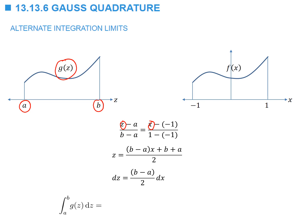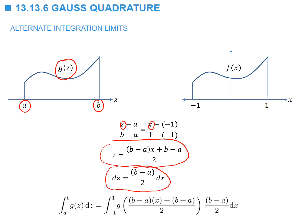To convert the integration, if we want to integrate the function g of z from a to b, we replace z with x using the transformation relationship, and we replace dz with dx using the dz relationship. When we substitute, we get the transformed integral.